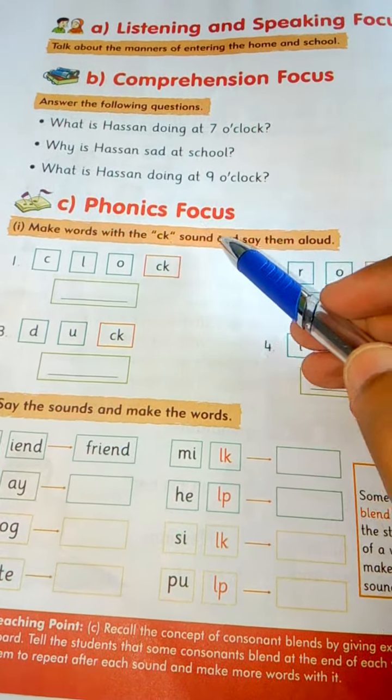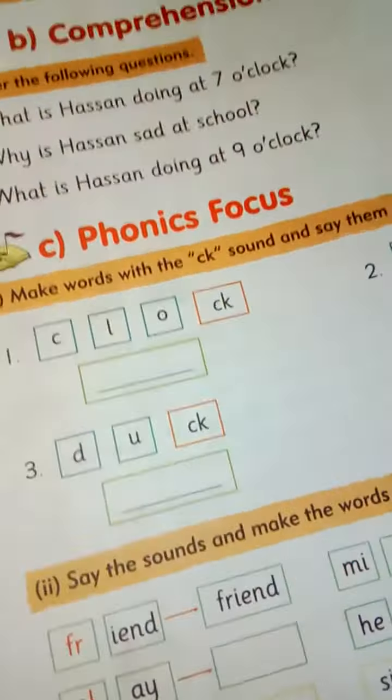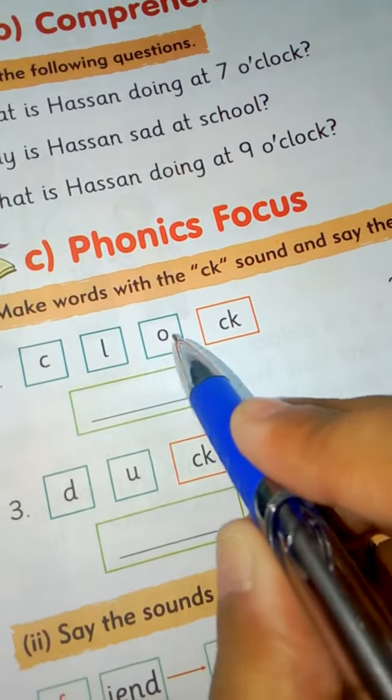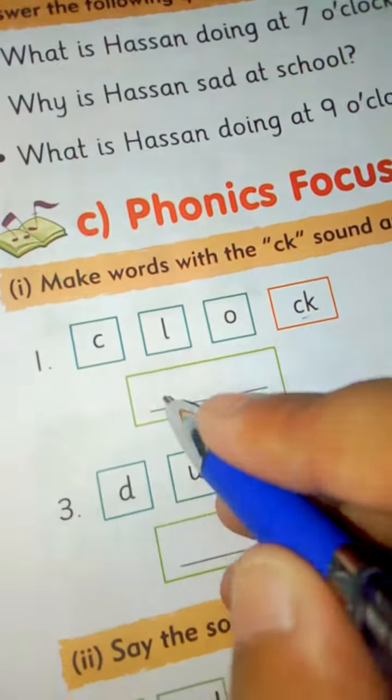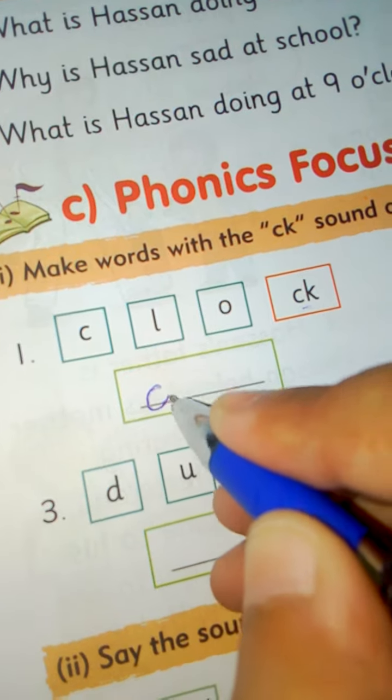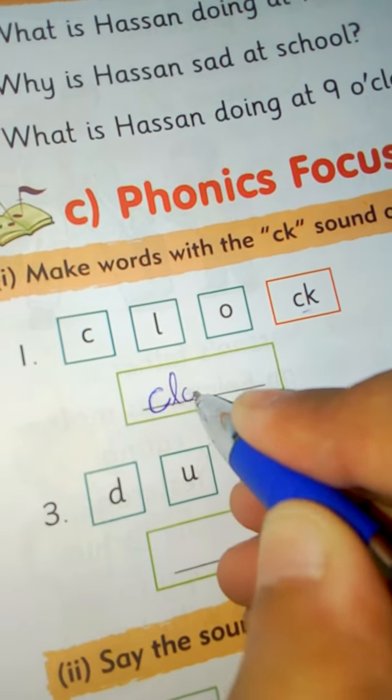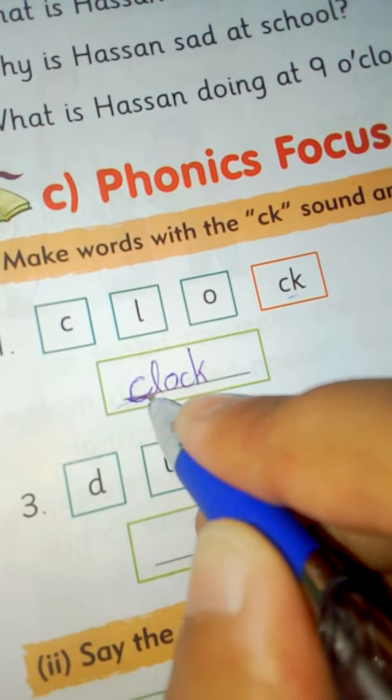Sound and say them aloud. This word we have written, it's C-L-O-C-K. This is the sound of K. We will write this here: C-L-O-C-K, clock. We will write it here like here.